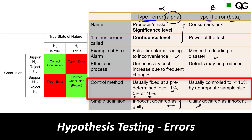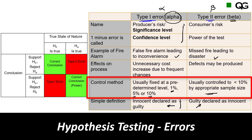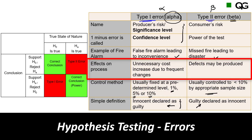Type 2 error is controlled by the sample size. You cannot choose both errors independently for a specific sample size — you pick the alpha value at the beginning, and then your beta or Type 2 error is determined by the sample size. If you want to reduce beta error, go for a bigger sample size.